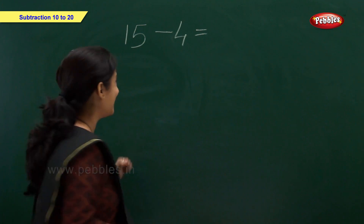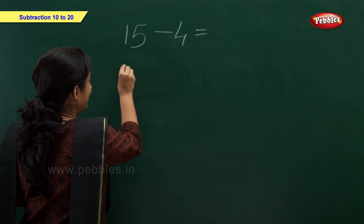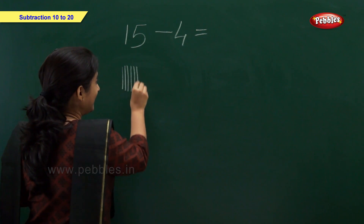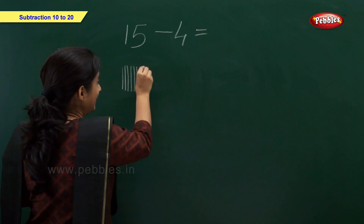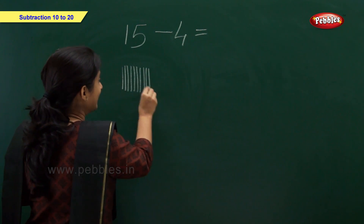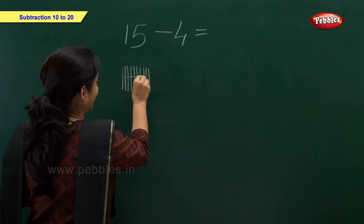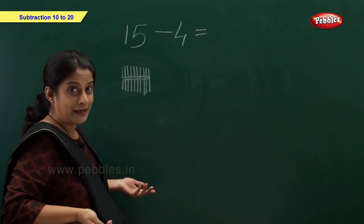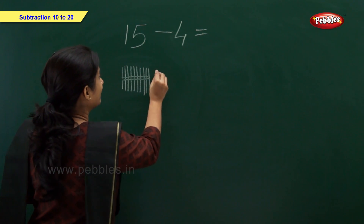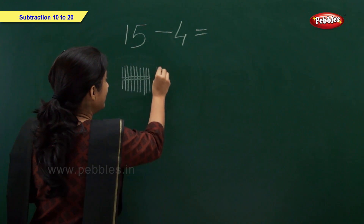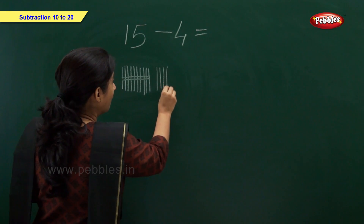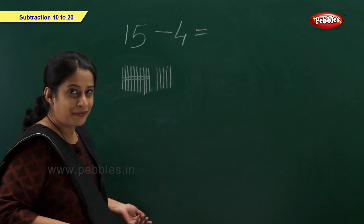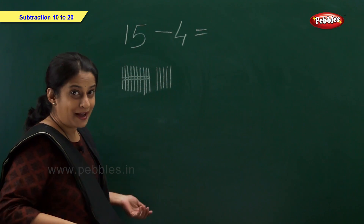Let's write: 1, 2, 3, 4, 5, 6, 7, 8, 9, 10. This is our bundle of 10. Then 1, 2, 3, 4, 5 — that's 5 ones.